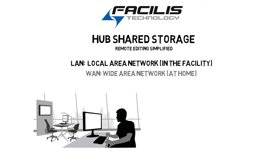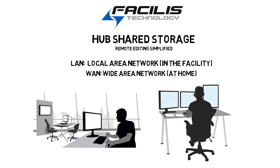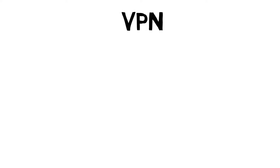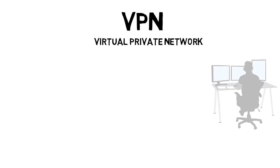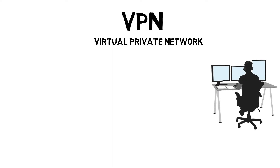WAN is when you're on the Wide Area Network — could be at home, at a coffee shop, or another facility. Normally, people use VPN. VPN is a Virtual Private Network. VPN uses software that adds your home system to the network within the facility.